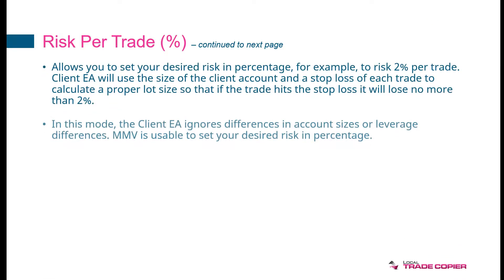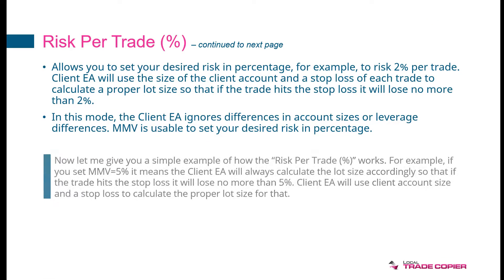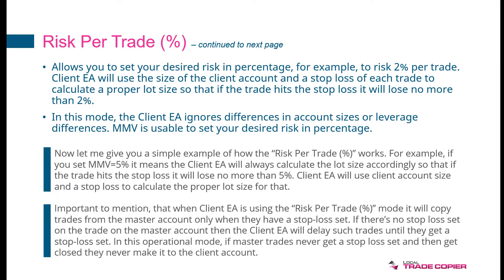The next one is the risk per trade in percentage. This allows you to set your desired risk in percentage — for example, 2% per trade. Client TA will use the size of the client account and the stop loss of each trade to calculate a proper lot size, so that if the trade hits the stop loss, it will lose no more than 2%.